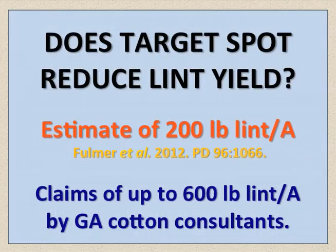Ultimately, the key question is whether or not target spot negatively impacts cotton yield. Last year, Fulmer estimated that lint losses to target spot may reach 200 pounds per acre. Cotton consultants in southwest Georgia claim that lint losses in susceptible varieties could be as high as 600 pounds per acre. Ongoing research in Alabama is trying to answer this critical question.